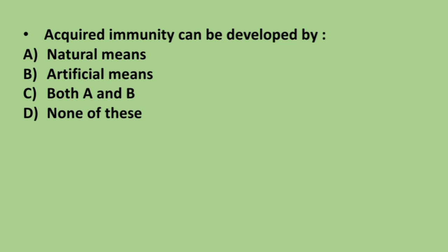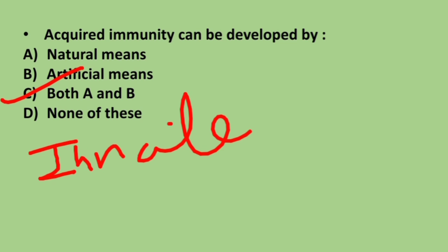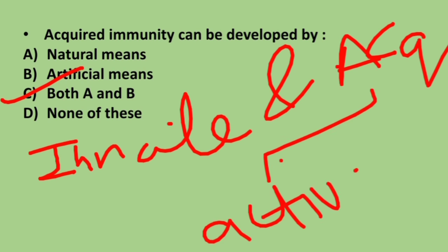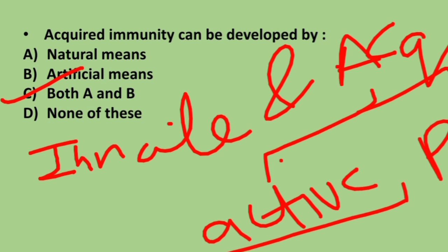Next question: acquired immunity can be developed by — options are natural means, artificial means, both A and B, or none of these. The correct answer is option C. Acquired immunity can be developed by both natural and artificial means. There are two types of immunities: innate and acquired.